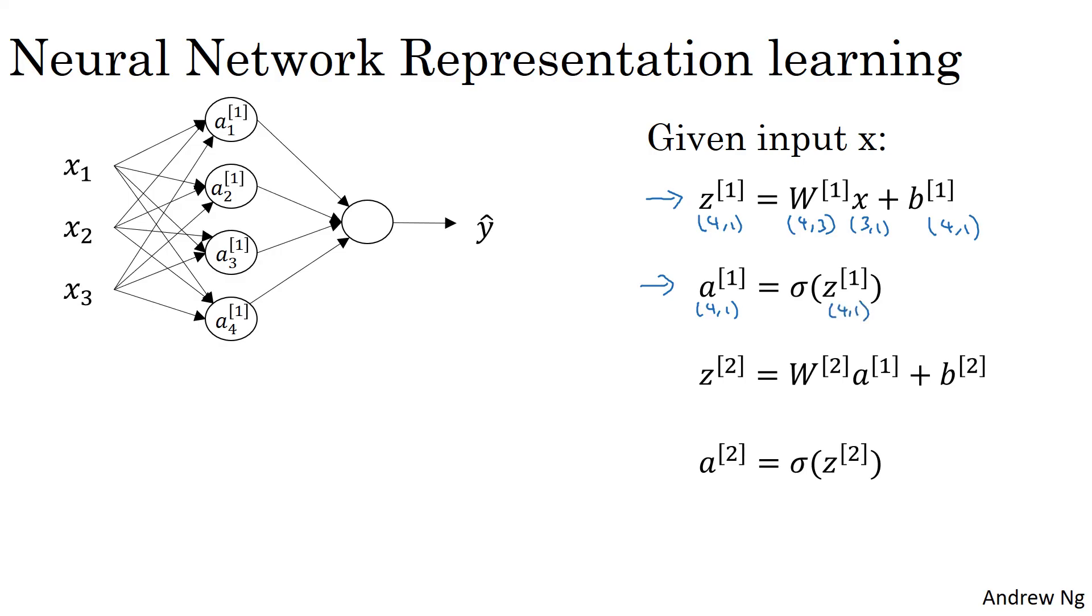And remember that we said x is equal to a0, just like y hat is also equal to a2. So if you want, you can actually take this x and replace it with a0. Since a0 is, if you want, is an alias for the vector of input features x.